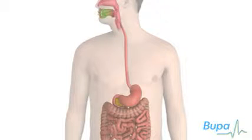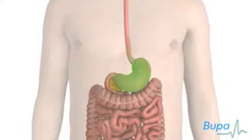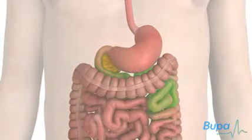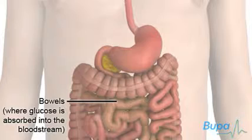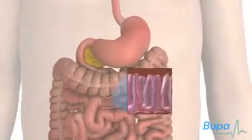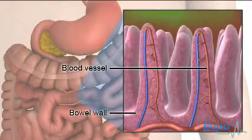Glucose is absorbed from food and drink during digestion. Once food has been broken down, the glucose passes into your bloodstream through blood vessels in your bowel wall.